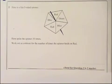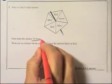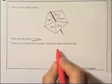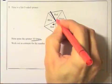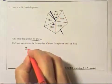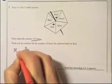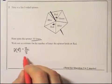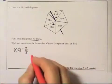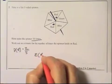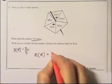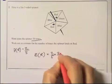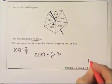Question 2 shows a spinner. The spinner is spun 30 times. They want an estimate of the number of times it lands on red. If we look at the reds, we've got a red there and a red there. That is 2 out of 5. So the probability of red is 2 out of 5. If we want the estimate, we multiply the probability by the number of times it spins. So the expected value of red is 2 fifths times 30, which comes to 12.